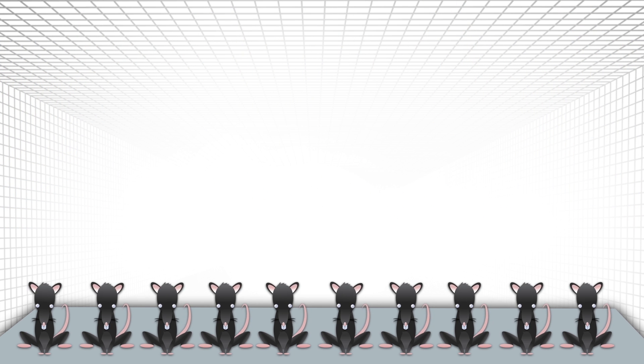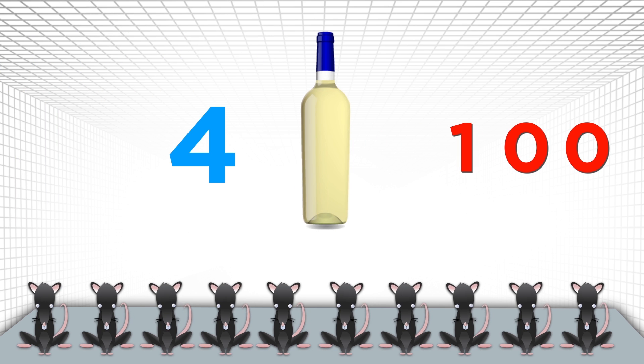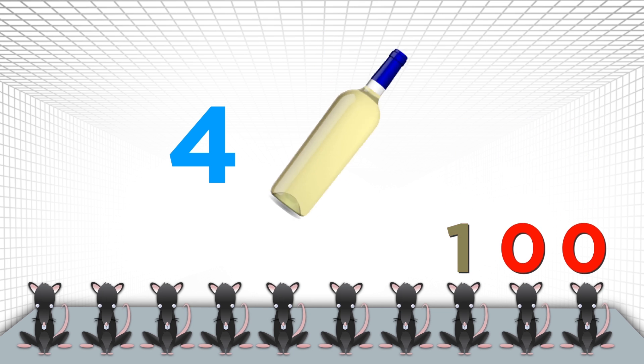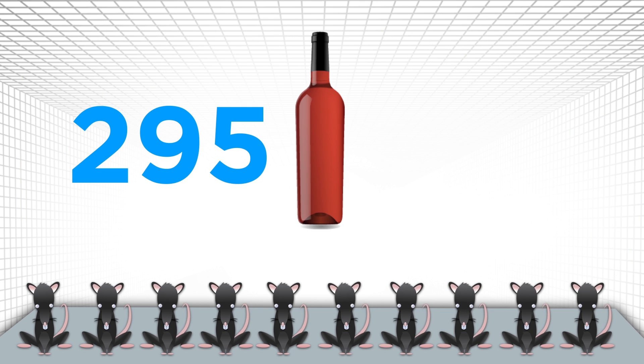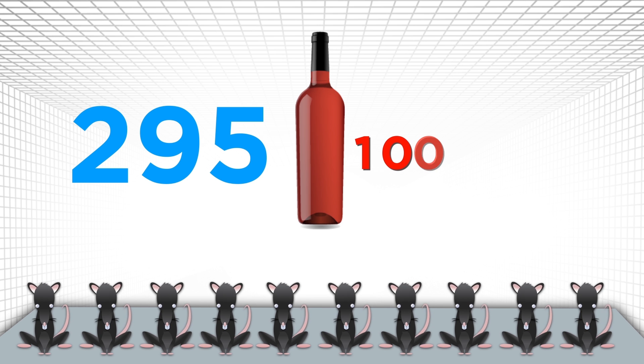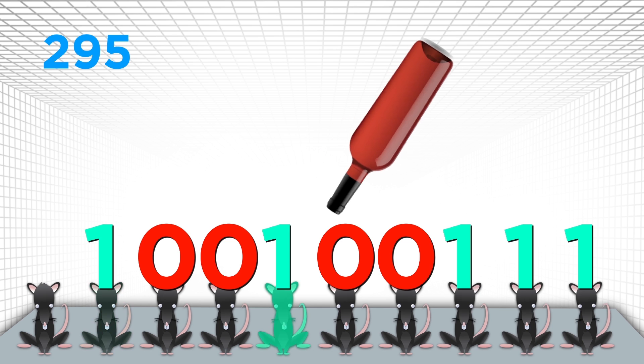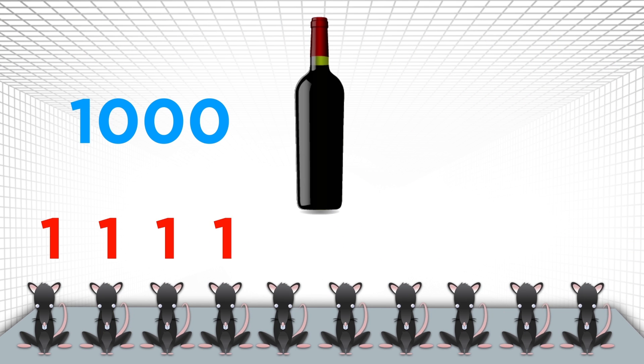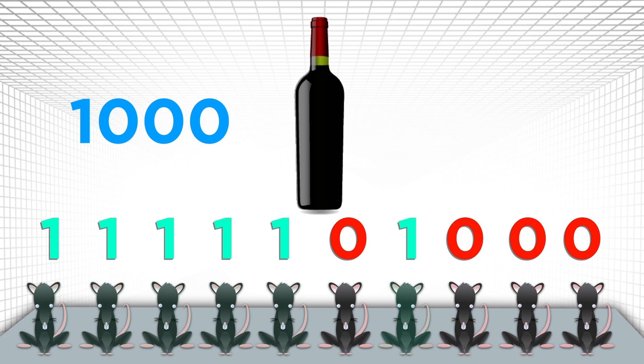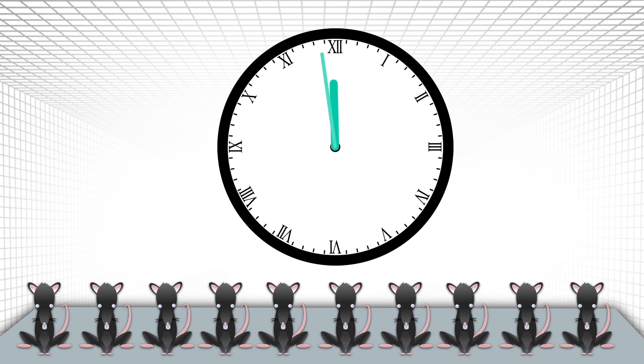That's kind of a mouthful, but here's some examples. Bottle number four is one zero zero in binary. So feed one drop of bottle four to the third rat from the right. Bottle number 295 is represented in binary as one zero zero one zero zero one one one. So feed it to these corresponding rats. Bottle one thousand is represented in binary as one one one one one zero one zero zero zero. So feed it to these corresponding rats. After you've given a few drops of wine to the appropriate rats, wait an hour.